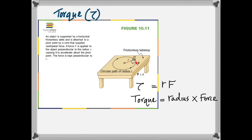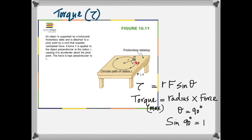In the diagram, that angle is 90 degrees, so torque equals RF sin theta. If theta is 90 degrees, then sin 90 is 1, and the torque becomes maximum. So torque is the product of the distance, the force, and the sine of the angle between them.